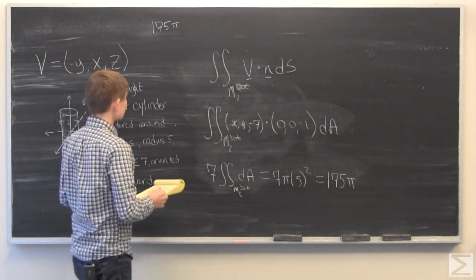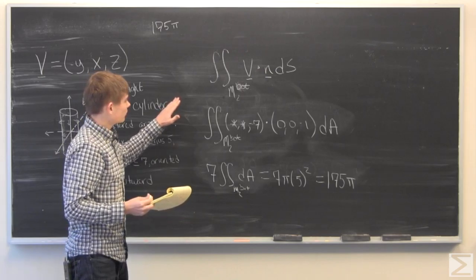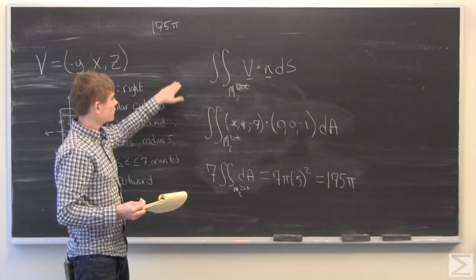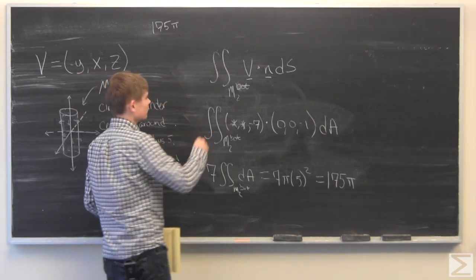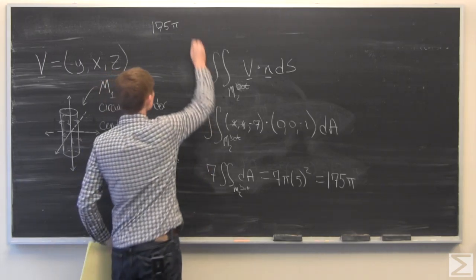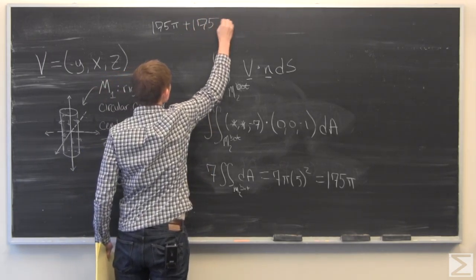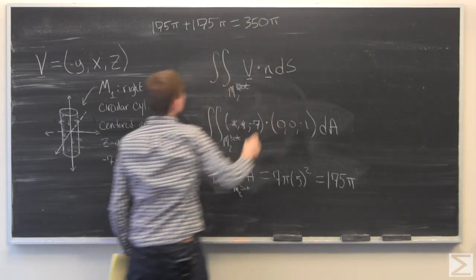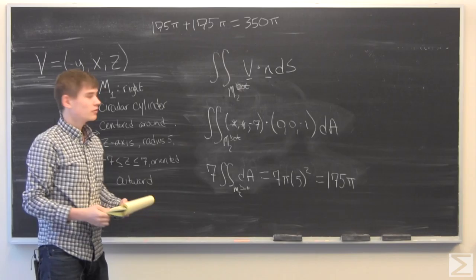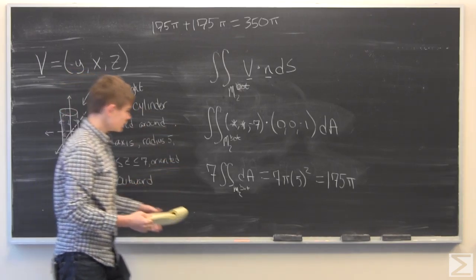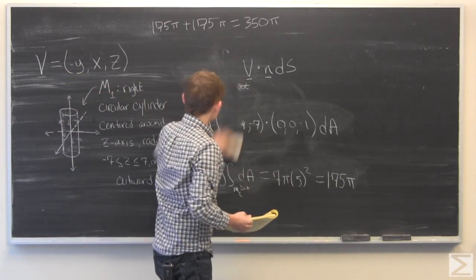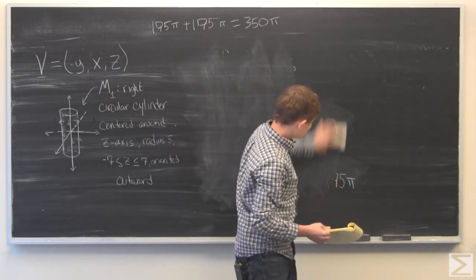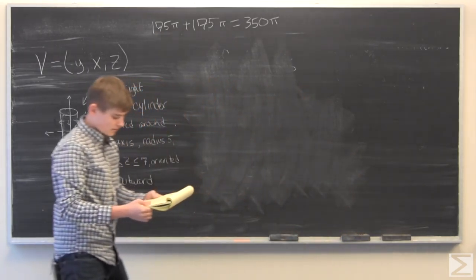Therefore, the flux of V through the surface M2 is equal to the sum of M2's parts, the flux of V through the parts of M2. So we can just add these together and we get 350 pi for the flux of V through M2. And we've done part B.